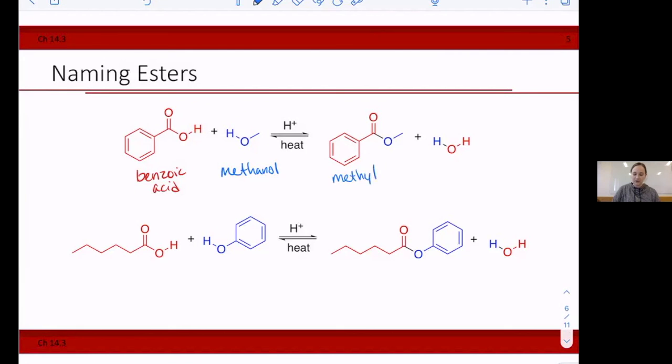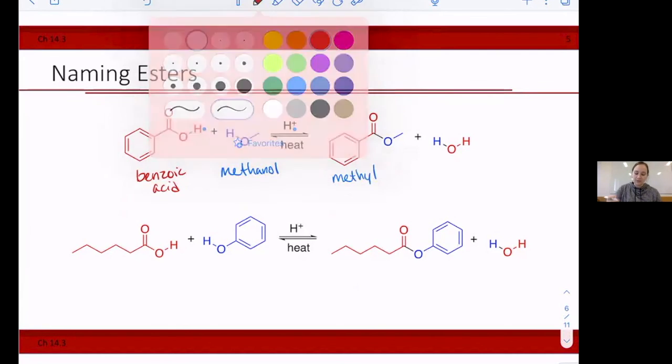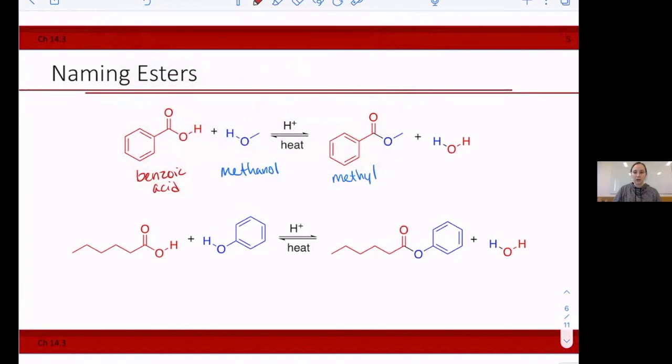So in my final product, I start with my alcohol. So I'll have methyl, changing that A-N-O-L to Y-L. And then I have my carboxylate name. So benzoic acid in its carboxylate form, once we ionize it is benzoate. So I have that name. So the name of this ester is methyl benzoate.